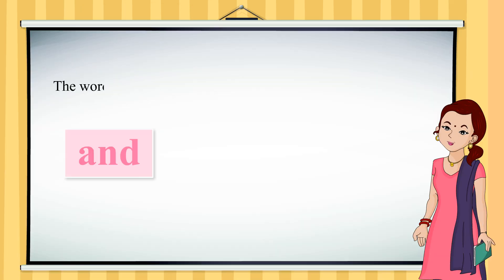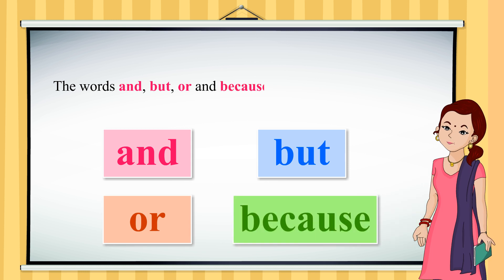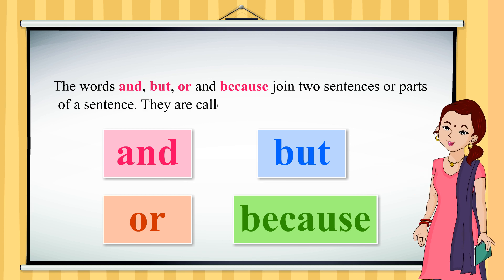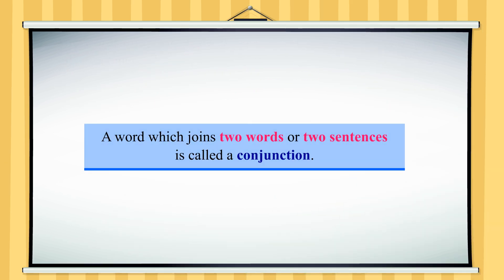The words 'and', 'but', 'or', and 'because' join two sentences or parts of a sentence. They are called joining words or conjunctions. A word which joins two words or two sentences is called a conjunction.